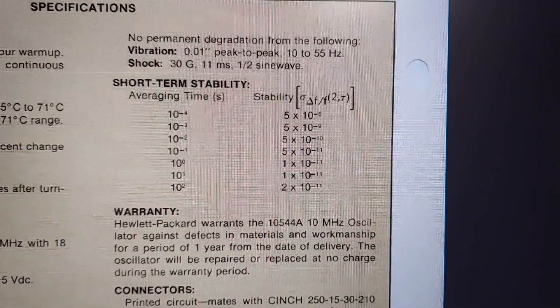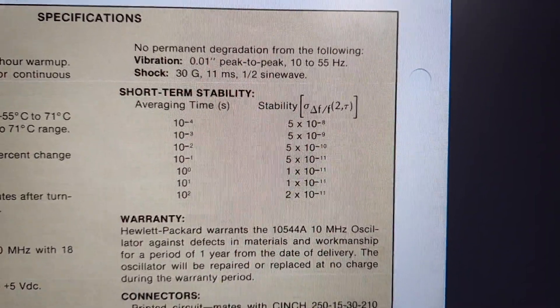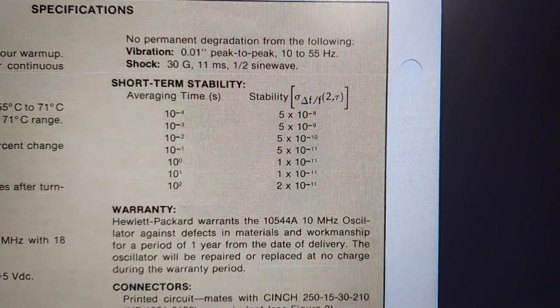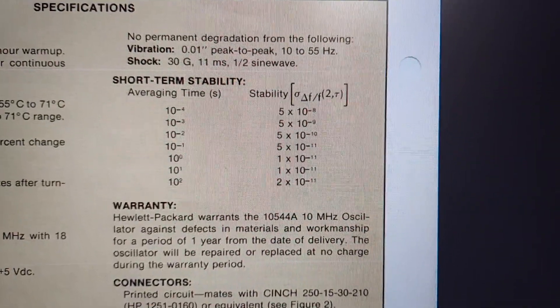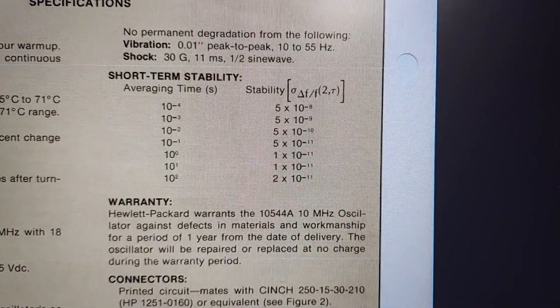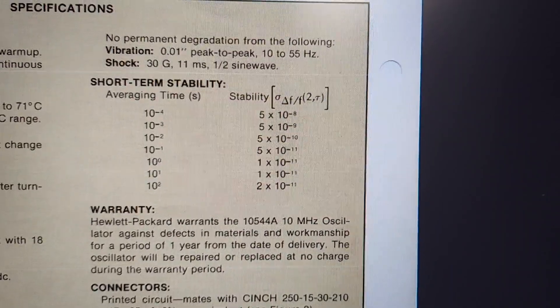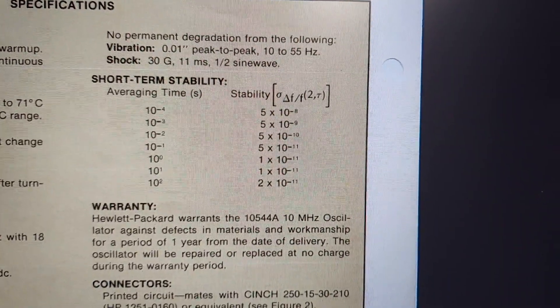Just for a quick reference, this is what the specifications call for. At 100 seconds we should be within 1 times 10 to the minus 11th, and at a thousand seconds it should be 2 times 10 to the minus 11th. We'll fire up Time Lab and see what we get.